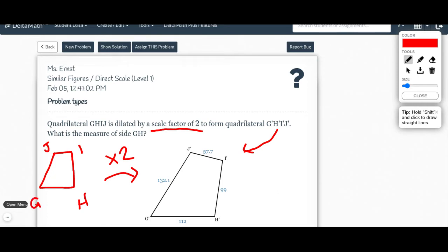The question is asking what is the measure of side GH? So that's this side right here, which means I need to know that I took something times two, and I ended with 112, because that's the corresponding side. So in order to figure out what that is, I'm going to work backwards. I'm going to take 112 divided by two, so 112 divided by two, and that's going to give me the original side of GH, which looks like it's going to be 56.